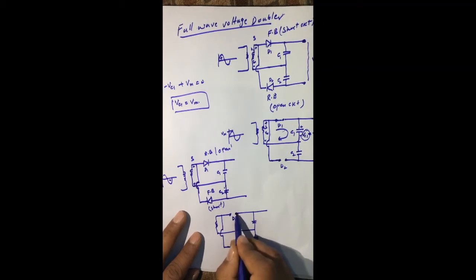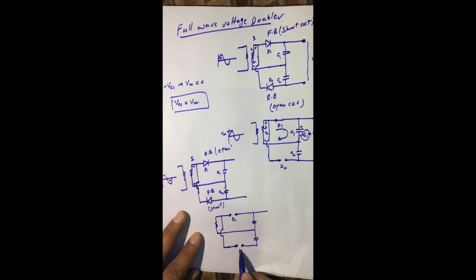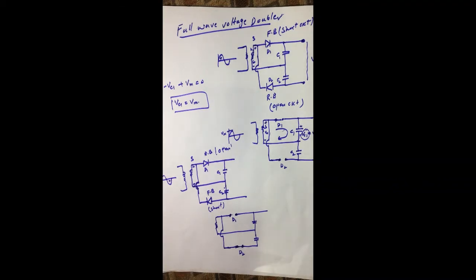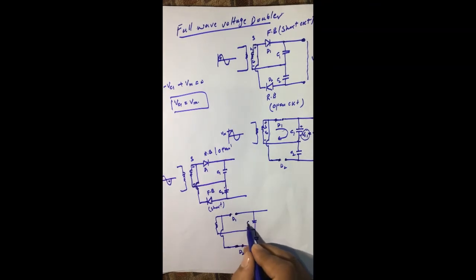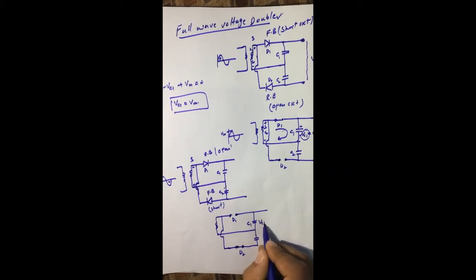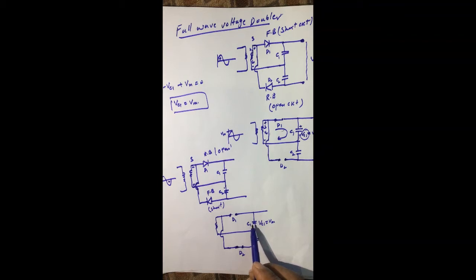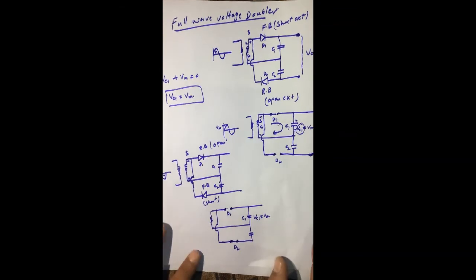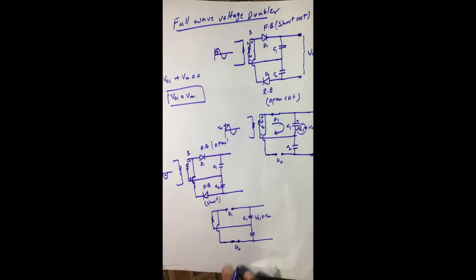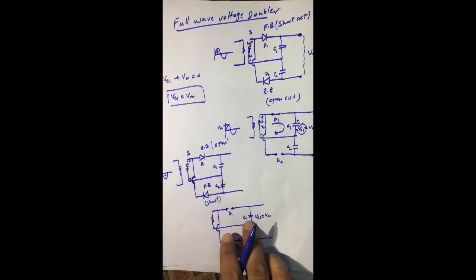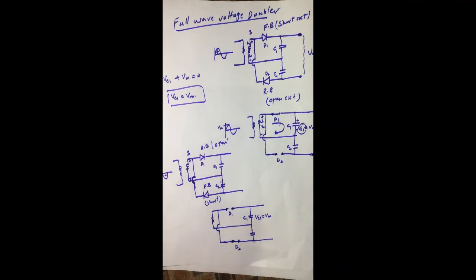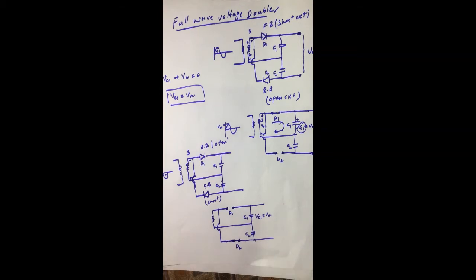In the redrawn circuit, diode D1 is open so there is no connection between those two points, and diode D2 is forward biased acting like a short circuit. Capacitor C1, which charged to its maximum value VC1 = Vm during the positive half cycle, does not discharge because this path is open and the load resistance is not yet connected. So capacitor C1 remains as it is during this negative half cycle.